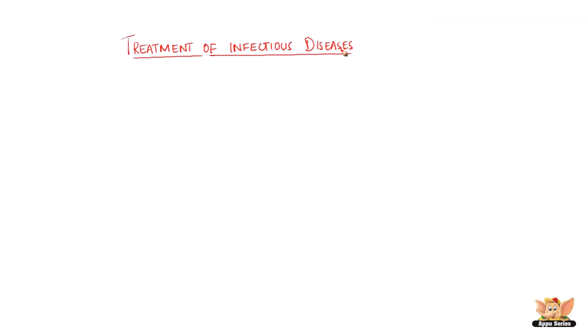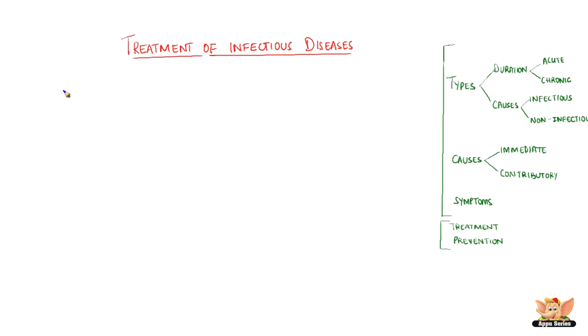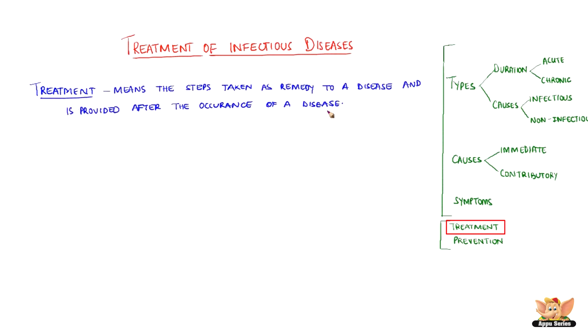Treatment of infectious diseases. When we know the symptoms and cause of a disease, we have to provide the treatment accordingly. Treatment means the steps taken as a remedy to a disease. Note that it is provided after the occurrence of a disease.